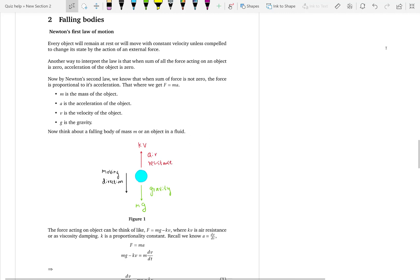You have this mass times gravity downwards, and then you will have viscous damping, which we call the air resistance. So there will be resistance from air.